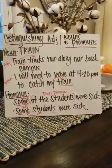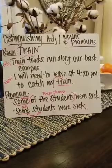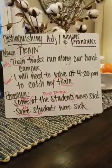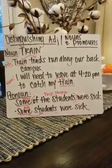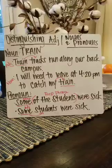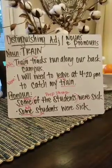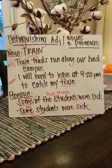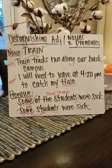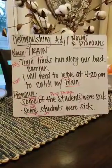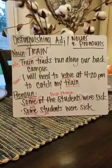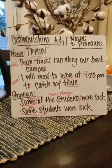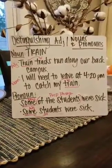In the second sentence, 'I will need to leave at 4:20 p.m. to catch my train.' In this sentence, the word 'train' is functioning as a noun because it's telling the reader that it's a train they're catching. The word 'my' is functioning as the adjective because it's telling you who the train belongs to — so it's 'my train.'